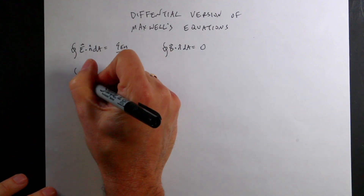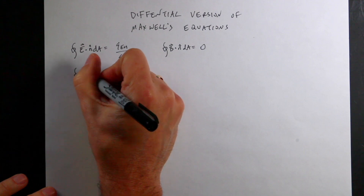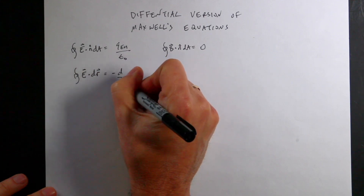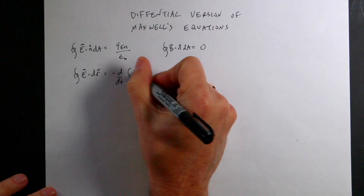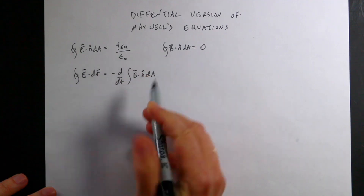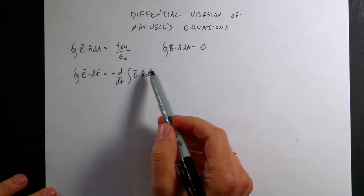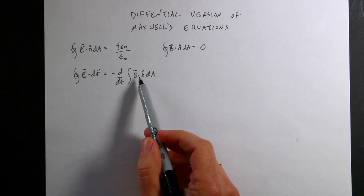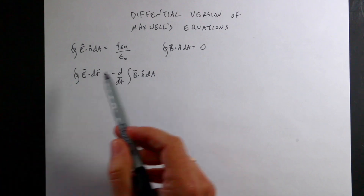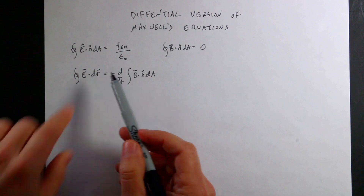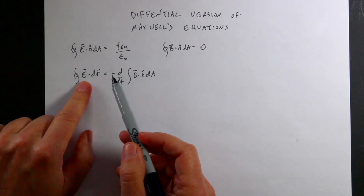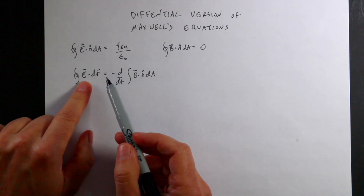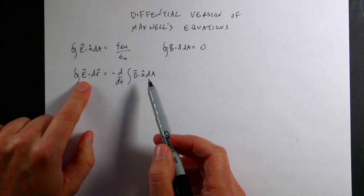The next one is Faraday's law. The line integral around a closed path of E dot dR equals negative the derivative with respect to time of the integral of B dot N-hat dA. This says that a change in magnetic flux through a surface produces an electric field around that path. Normally E dot dR around a closed path is zero — that's Kirchhoff's loop rule — but not if the magnetic flux is changing. That's Faraday's law.